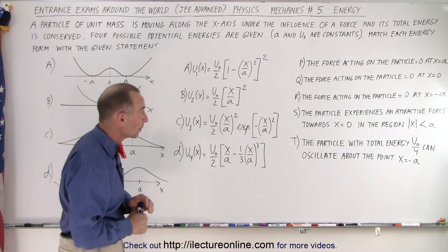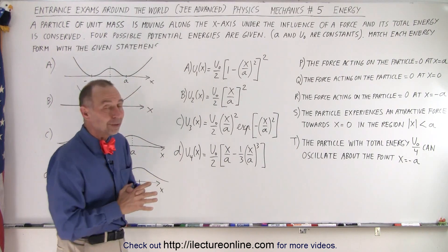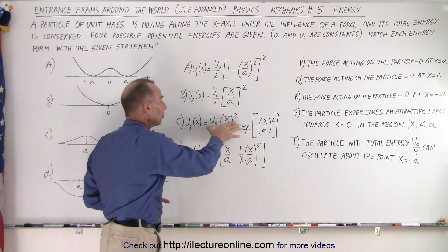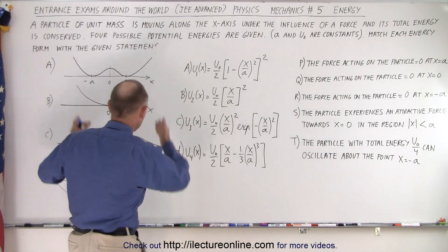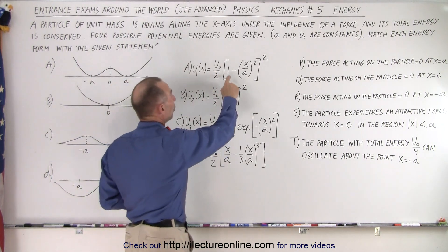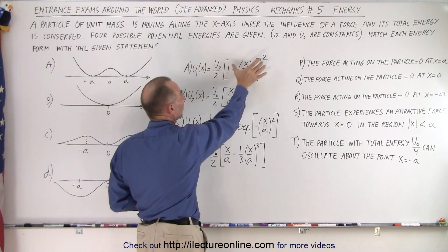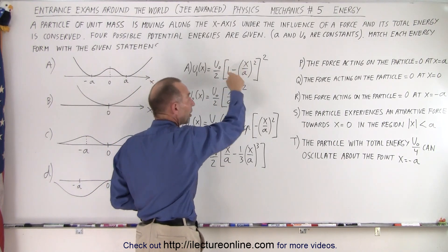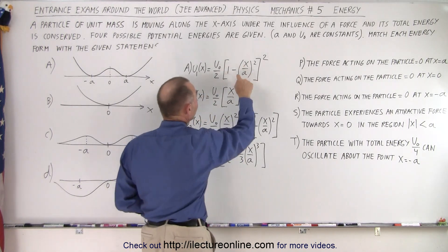Any one of the five statements could be appropriate for any one of the four equations in any combination possible, so it's quite complicated. The first thing to do is graph the potential energy functions of these four equations to make it easier. I've already done so. For the first equation, we have 1 minus x over a, the whole quantity squared. This is always positive.